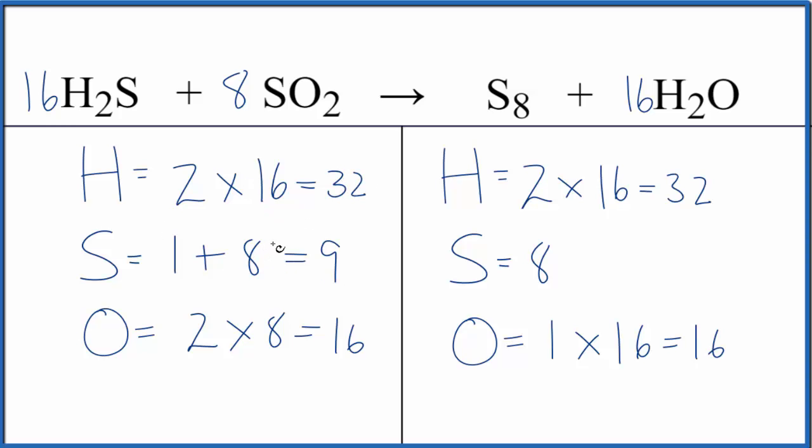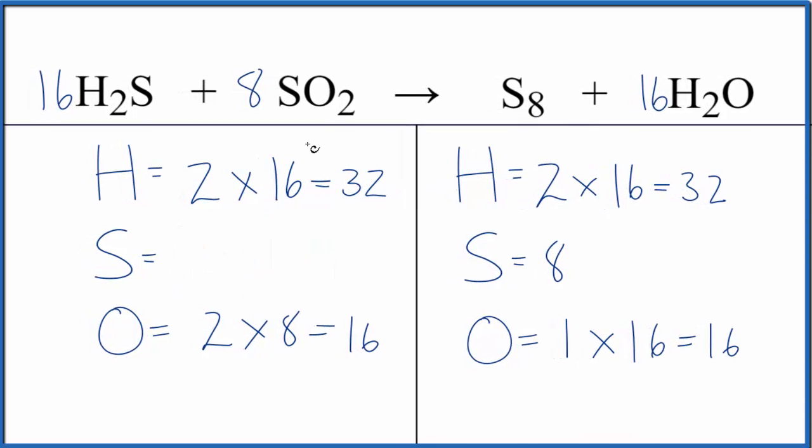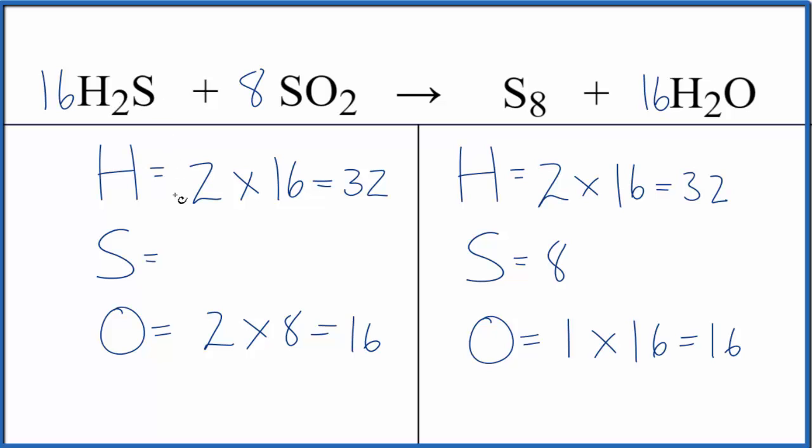And I need to update the sulfur atoms here. So now I have 16 times one, 16 plus eight. That gives me 24. And actually, if I put a three here, three times eight will give me 24 and I'm done.